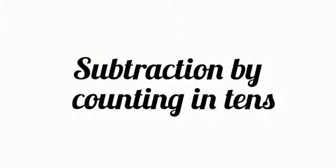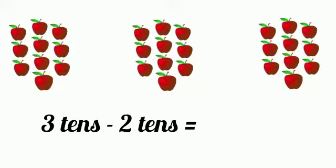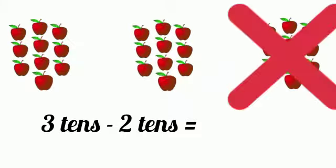Now, let us see how to subtract by counting in 10s. Here, you can see groups of 10s. How many 10s are here? Yes, 3 tens. See, each group has 10 apples. From this 3 tens, subtract 2 tens. Which means, cross out 2 tens. 1, 2.